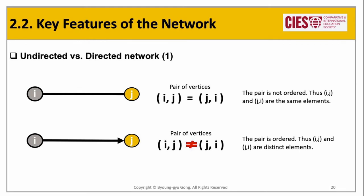There are many different types of networks according to their key features. First, networks are divided into two groups — undirected or directed — according to their edge types. In an undirected network, the pair of vertices in the edge list is not ordered; i and j is equal to j and i, meaning the order doesn't matter. But in a directed network, the pair of vertices is ordered: i and j is not the same as j and i.